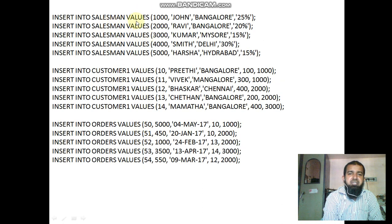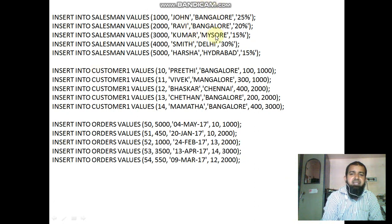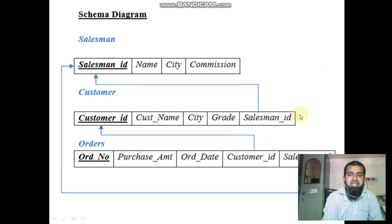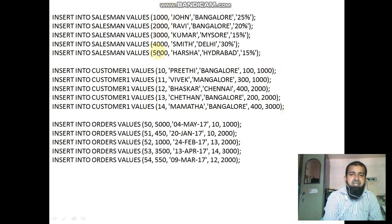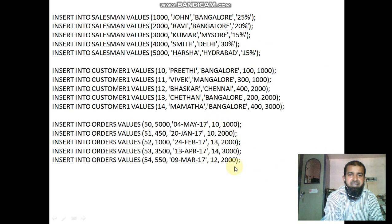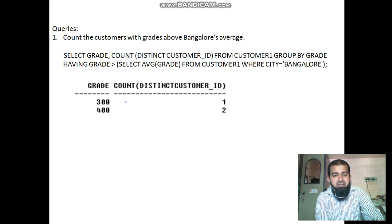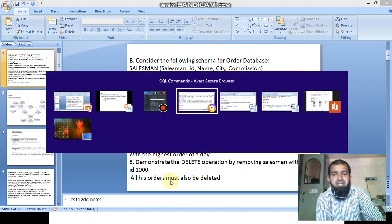Next, insert the values. The salesman table contains salesman ID, salesman name, city, and commission. Similarly, the customer table contains customer ID, customer name, city, grade, and salesman ID. The orders table contains order number, amount, date, customer ID, and salesman ID. After inserting, the salesman table, customer table, and orders table all contain their respective records. Before writing the queries, first create the tables and insert the values.